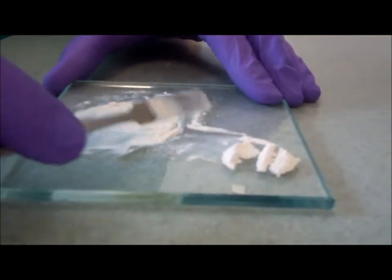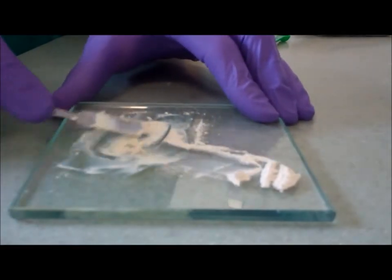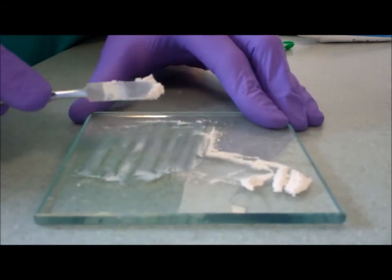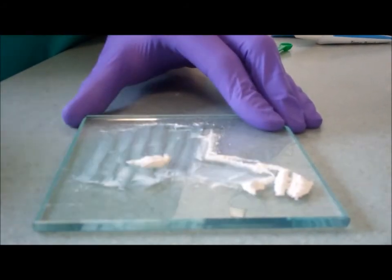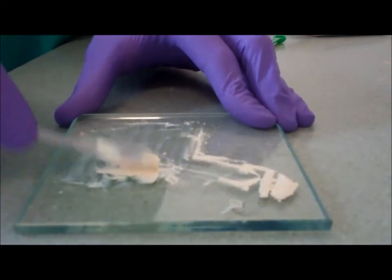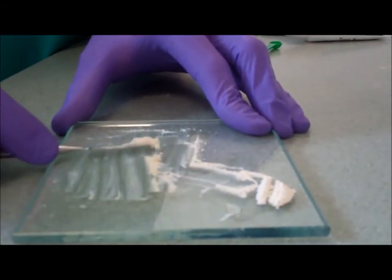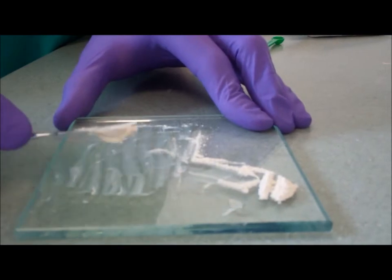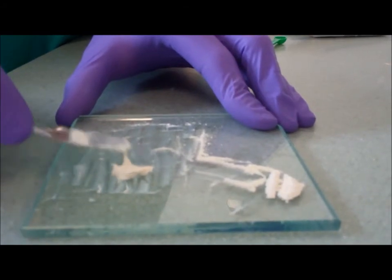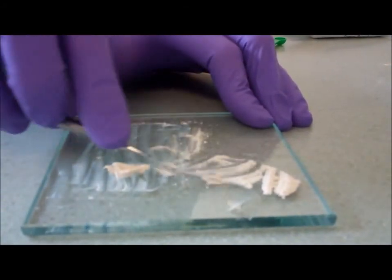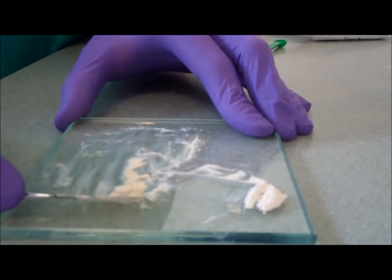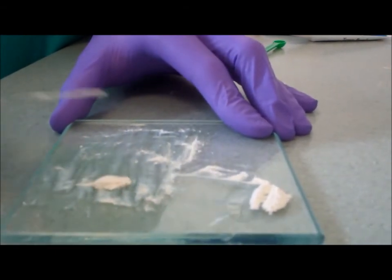Again, it's best to mix this on a glass slab, it's easier to bring it together. That's firm but a bit sticky which is probably about right for a lining. For a dressing you're just going to want to add a tiny little bit more powder, just a really small amount, just to get it so it's a little bit less sticky and holds its form a bit better.